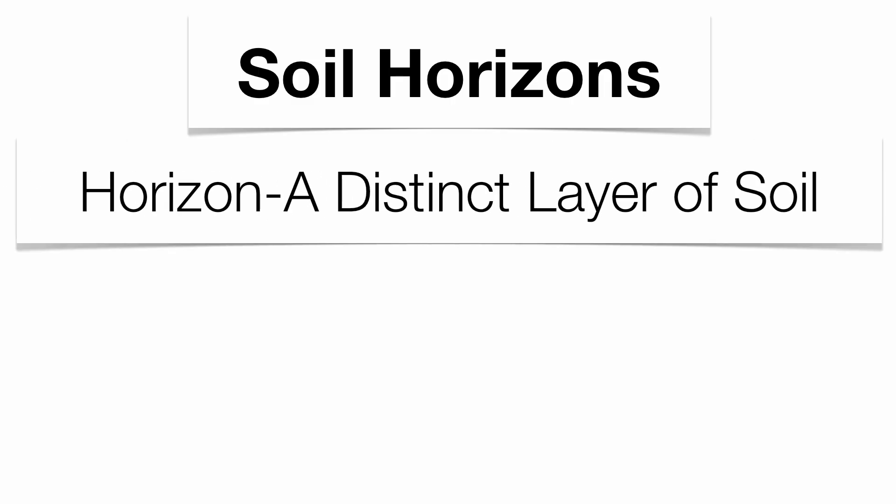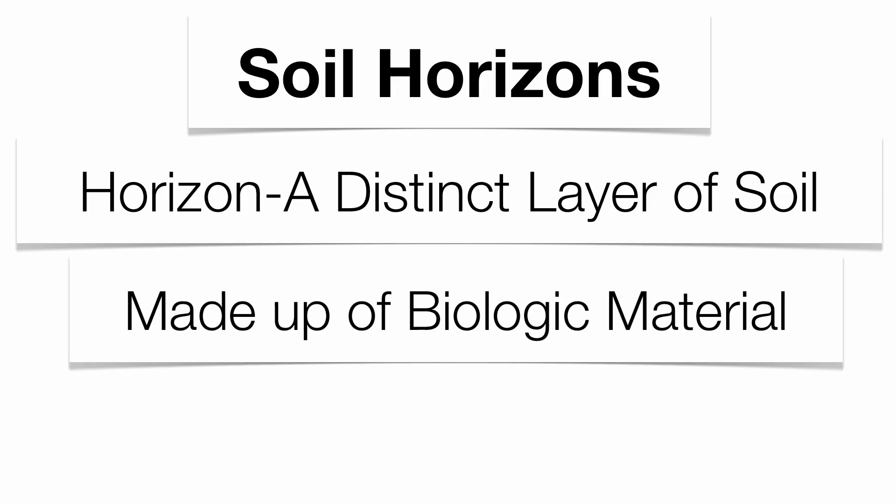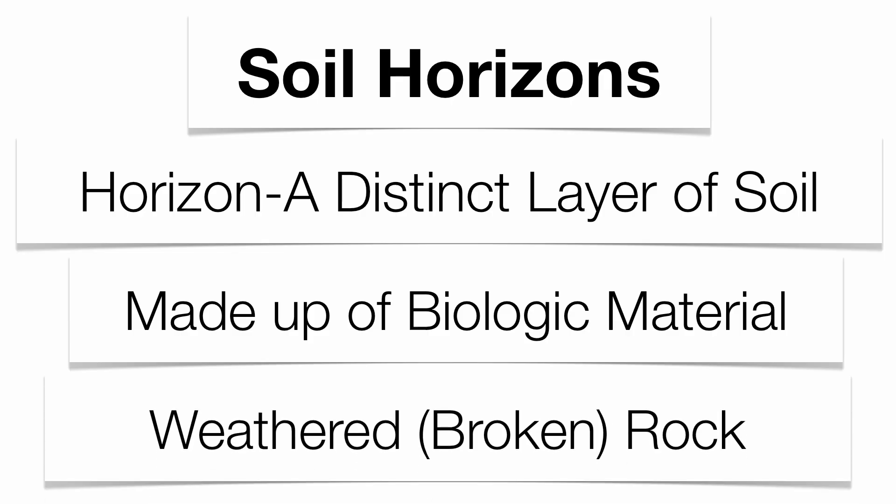Water that infiltrates into the ground passes through different layers of soil called horizons. Soil is made up of two major components: biological material — such as dead and decaying plant or animal matter — and very finely broken-up or weathered rock fragments. A lot of these horizons are made up of organic material.